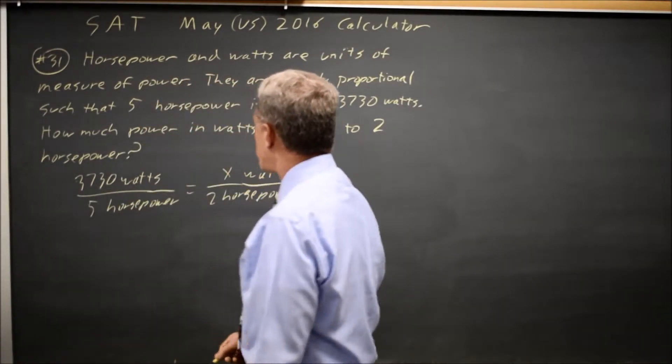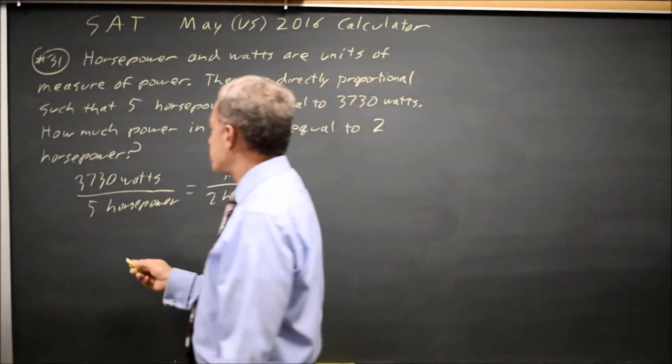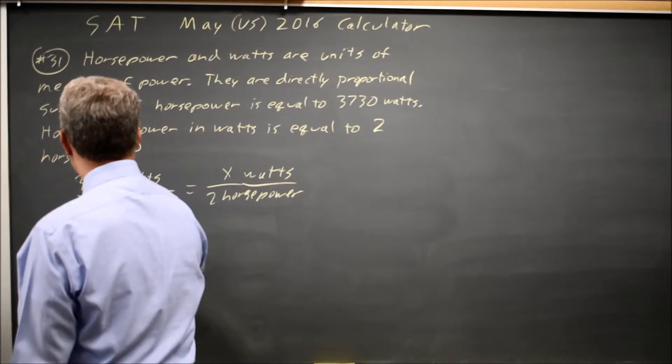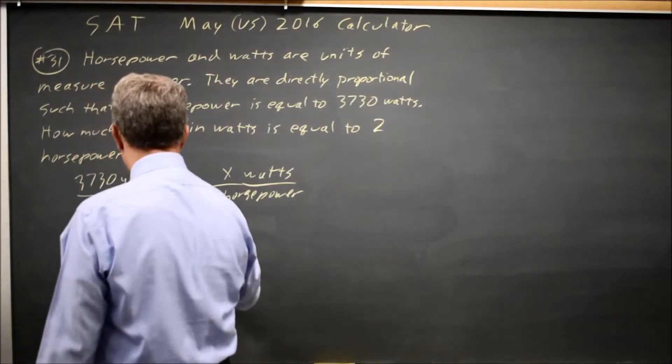I like to label my units to see I have watts over horsepower equals watts over horsepower. So I haven't set it up incorrectly, I haven't flipped it - 3730 over 5 equals x over 2.